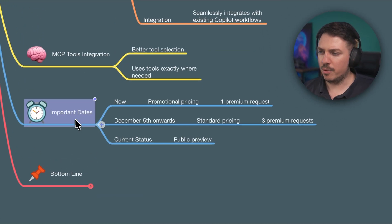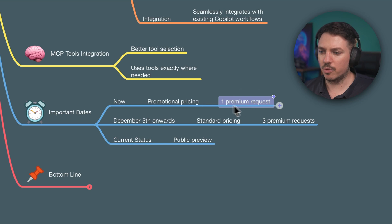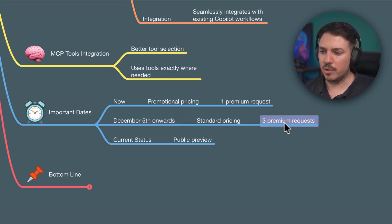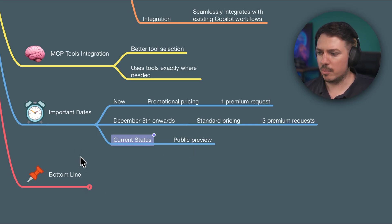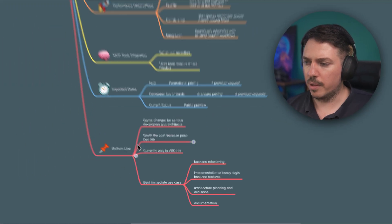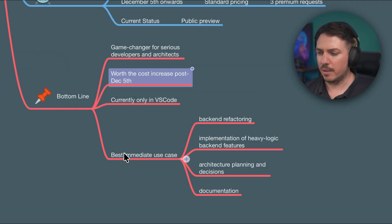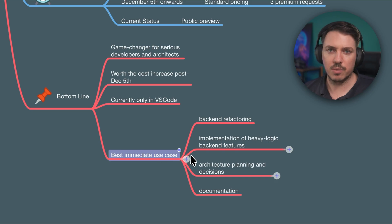Let's recap a few important dates. Right now we have promotional pricing. Starting from December 6th, it will be three premium requests per usage — still worth it in my opinion. Current status is public preview. As a quick recap, it's a game changer for developers, software architects, and similar roles. I'll use it for heavy development and business logic — planning architecture, analyzing complicated legacy code — Claude Opus 4.5 will be my model of choice.